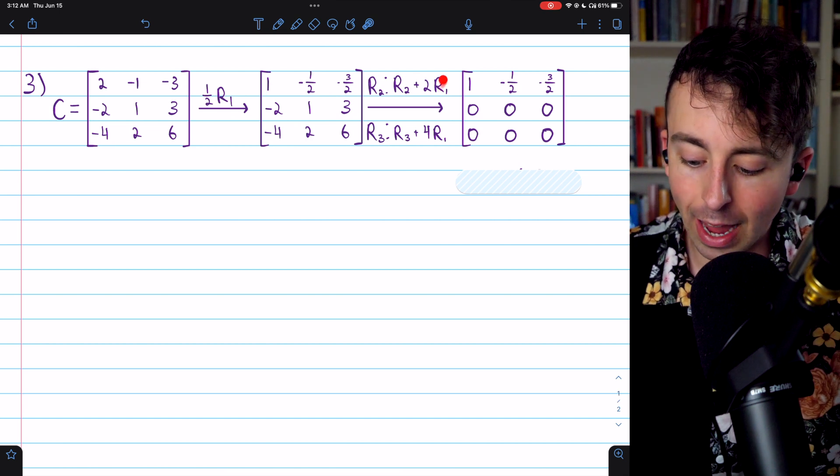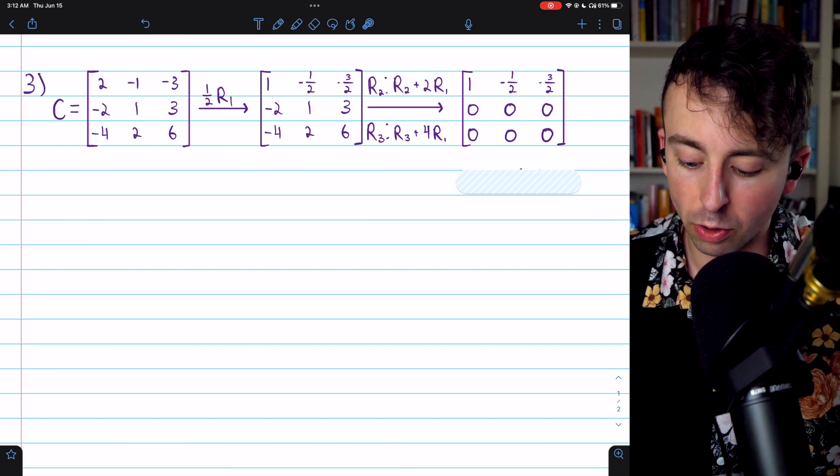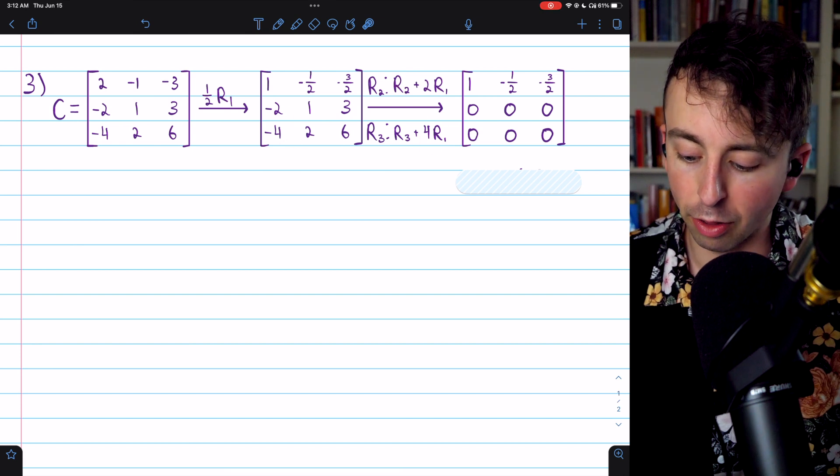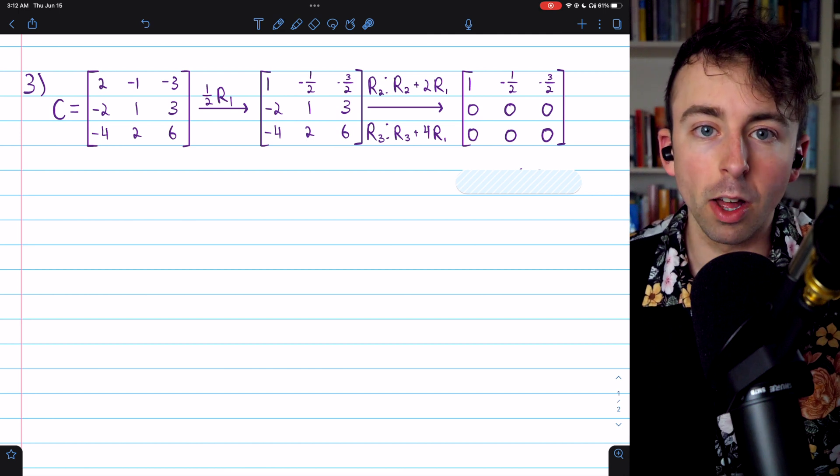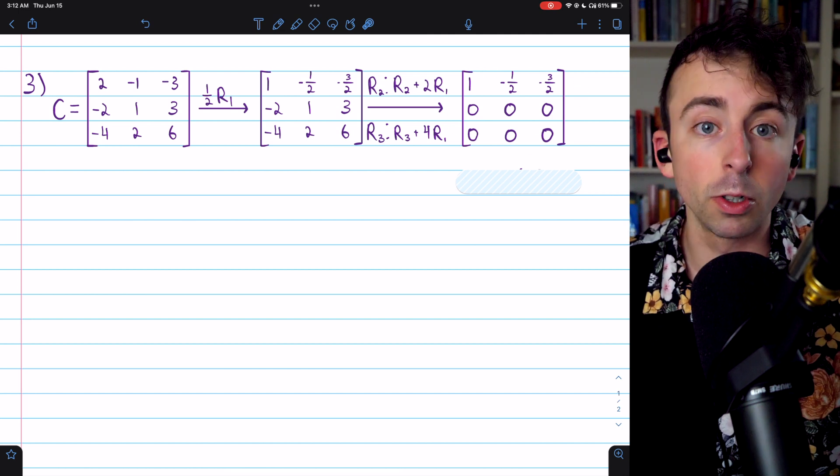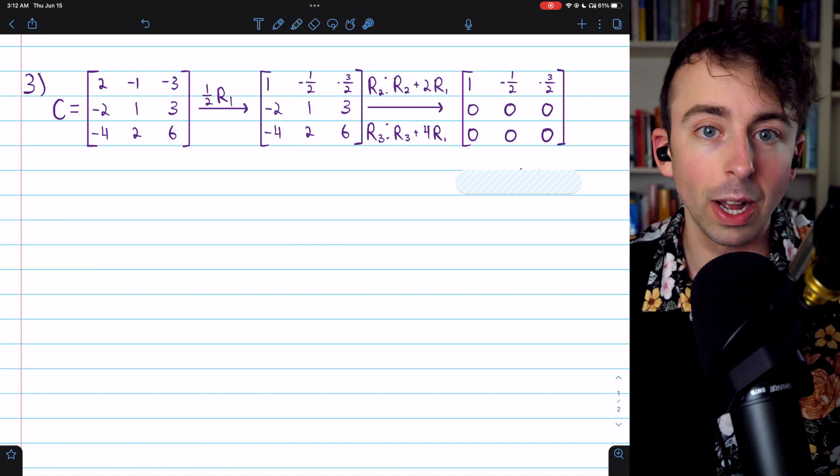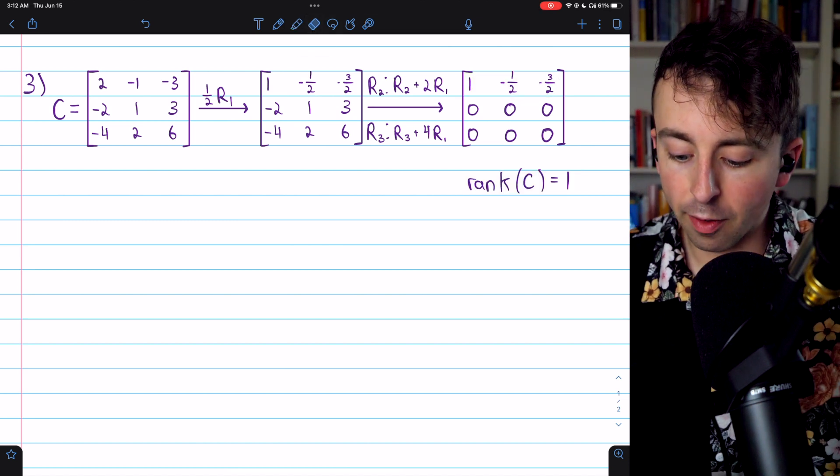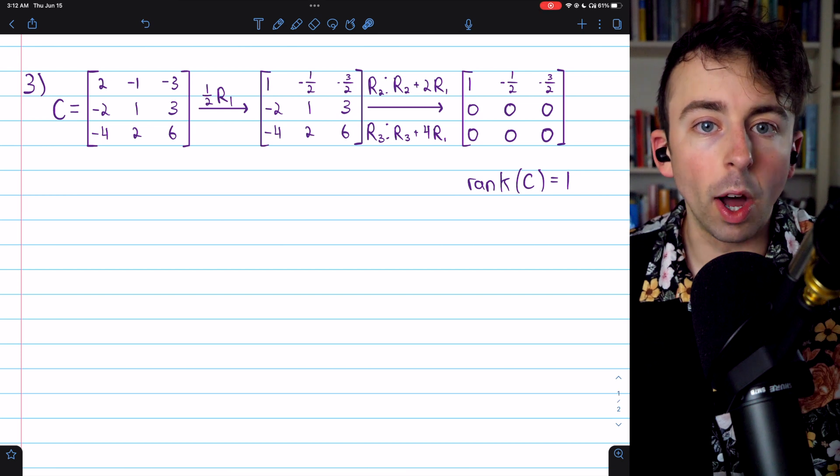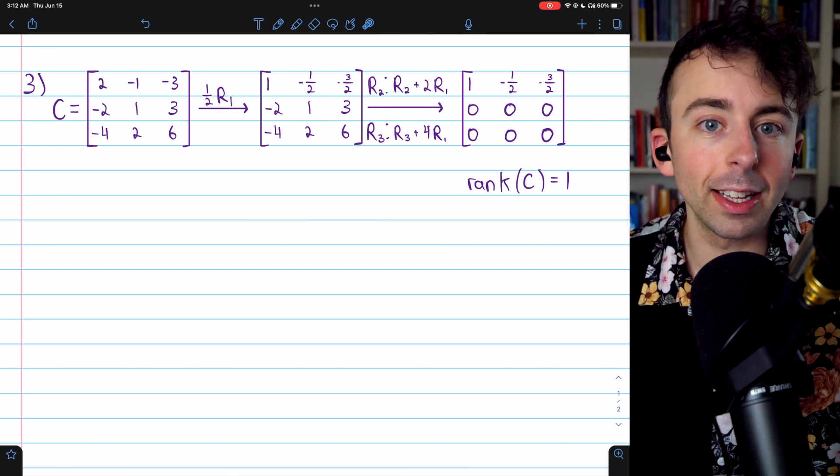So when we do that, add two copies of row one to row two and four copies of row one to row three, we get here. And now it is in row echelon form. It happens to be in reduced row echelon form here as well. Clearly, there is one non-zero row. And so the rank of matrix C is one. That is the dimension of its row space.